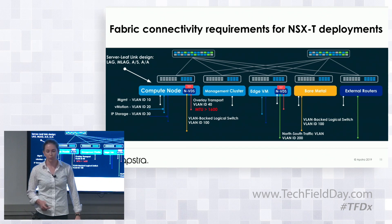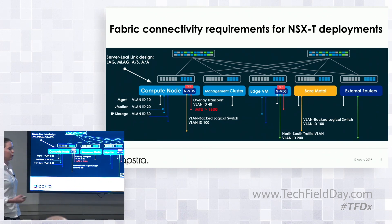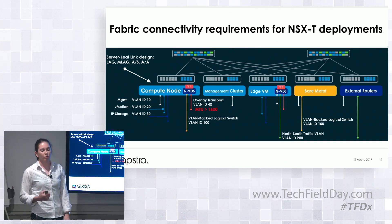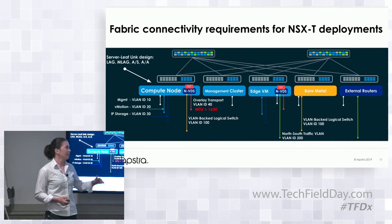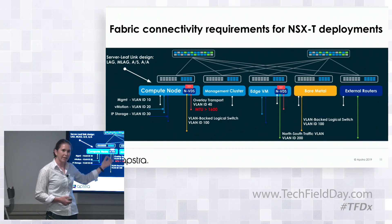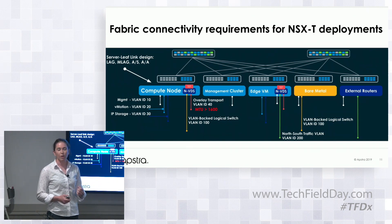There's configuration that needs to happen on the fabric, and what is specific about it is that it has to be identical on both the fabric side and the NSX-T infrastructure side — VLAN IDs have to match, MTU has to be correct on both systems, and the LAG configuration has to be correct on both systems.